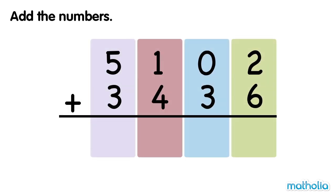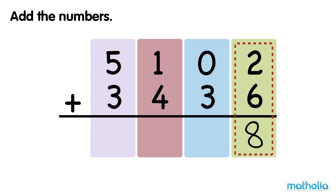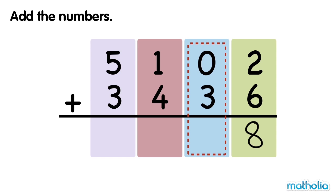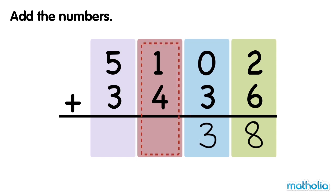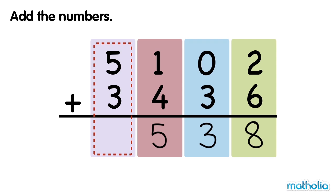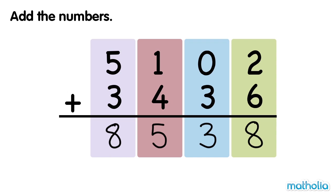Add the numbers. 2 ones plus 6 ones equals 8 ones. 0 tens plus 3 tens equals 3 tens. 1 hundred plus 4 hundreds equals 5 hundreds. 5 thousands plus 3 thousands equals 8 thousands. 5,102 plus 3,436 equals 8,538.